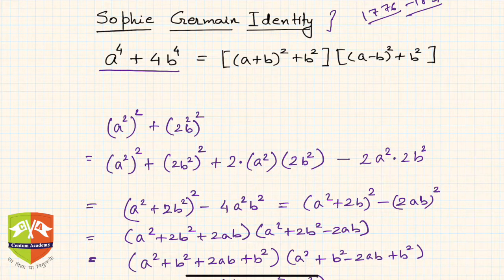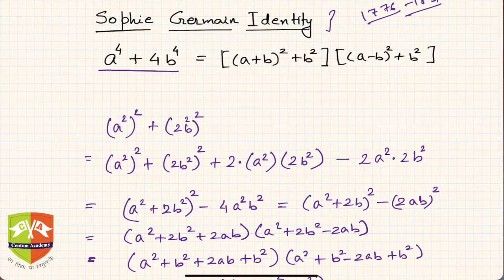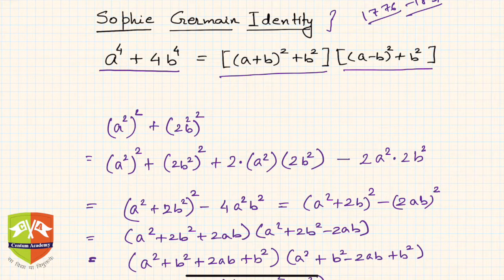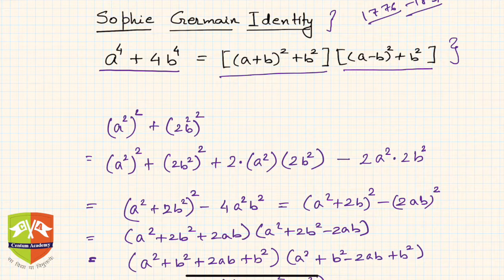The identity states that a to the power 4 plus 4 times b to the power 4 equals (a plus b) whole square plus b square, as one factor, times (a minus b) whole square plus b square. This identity is very useful if you have to prove that some expression is not a prime, and also allows you to factor such expressions into these two factors.